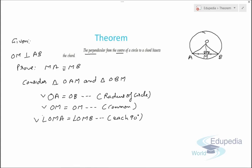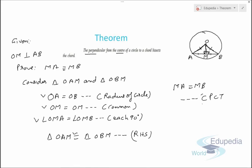We have three conditions. So we can say that triangle OAM is congruent to triangle OBM. We have one right angle, one hypotenuse equal, and one common side equal, so these two triangles are congruent by RHS. Therefore, MA equals MB by CPCT. This is how we can prove this type of theorem.